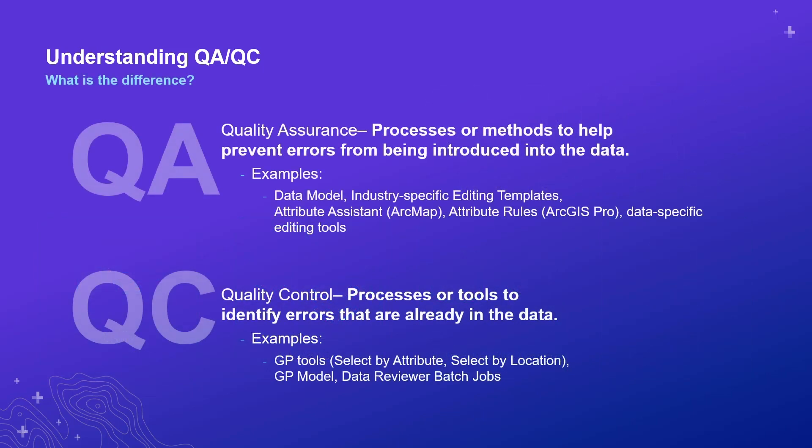Most of us know what QA and QC stand for — quality assurance and quality control — but did you know there's a difference? Quality assurance is a process or a way to prevent errors from being introduced into your data. Things I would call quality assurance include having a good, strong data model, using industry-specific editing templates, attribute assistant if you're still in ArcMap, attribute rules if you're in ArcGIS Pro, and other data-specific editing tools.